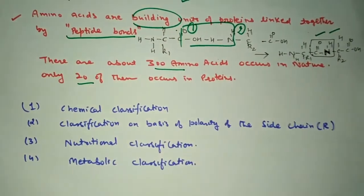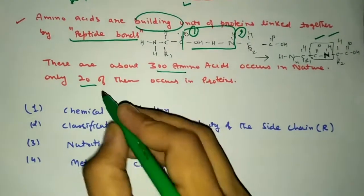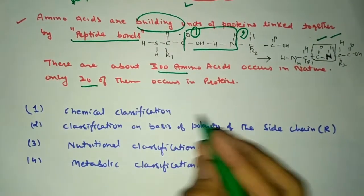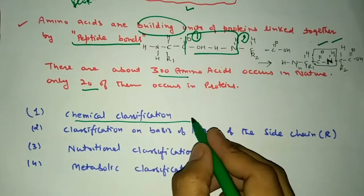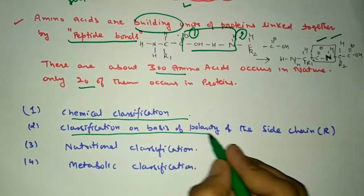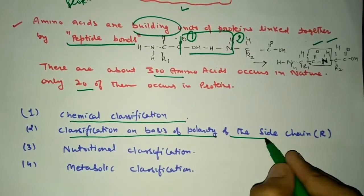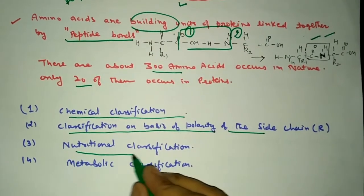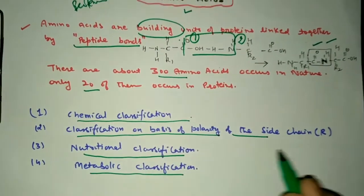Now discussing their classification, amino acids can be categorized into four ways: chemical classification, classification on the basis of polarity of the side chain, nutritional classification, and metabolic classification.